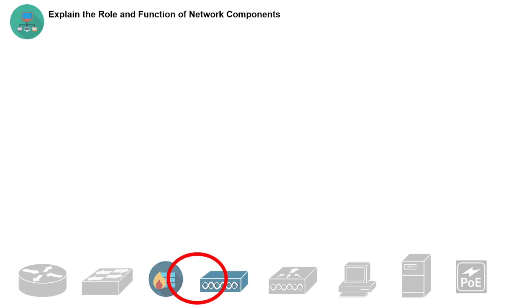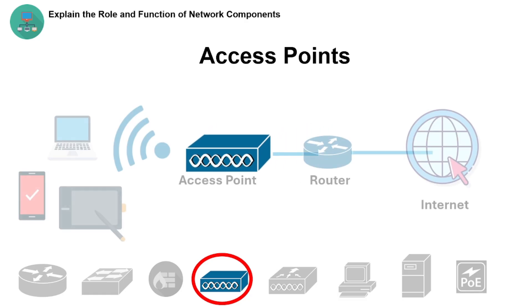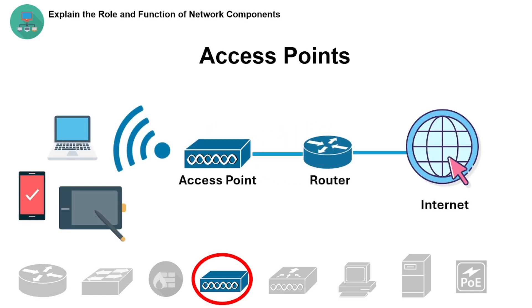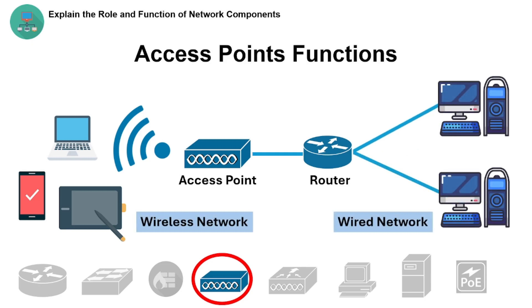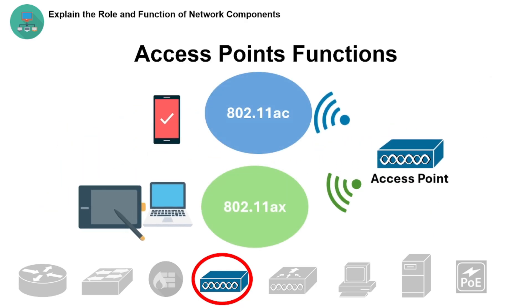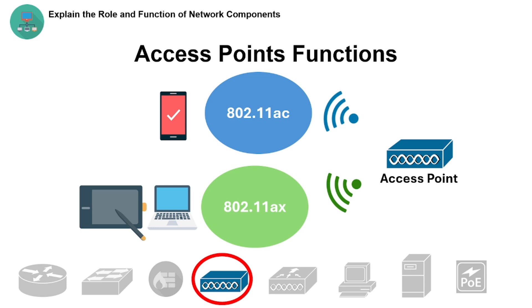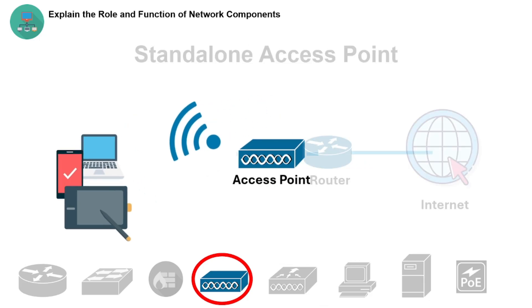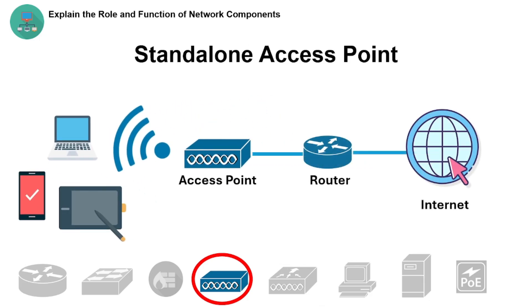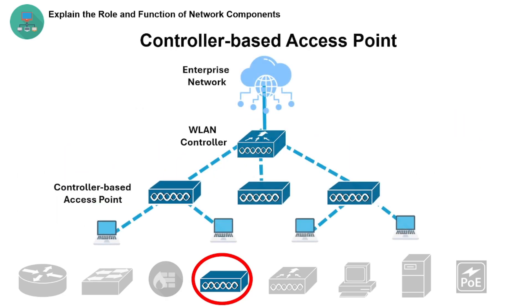Let's now explain access points — devices that allow wireless-capable devices to connect to a wired network using Wi-Fi. An access point acts as a bridge between wired Ethernet and wireless clients, and supports different wireless standards like 802.11ac and 802.11ax. There are two types: a standalone access point, which is managed individually, and a controller-based access point, which is managed by a central wireless LAN controller.